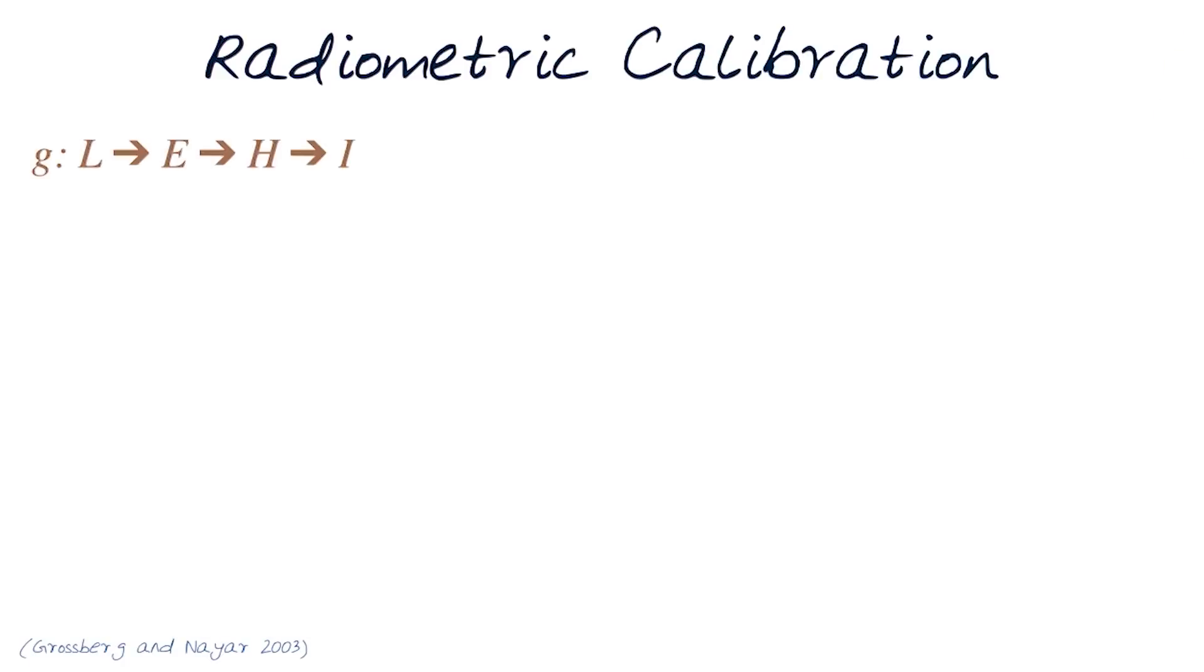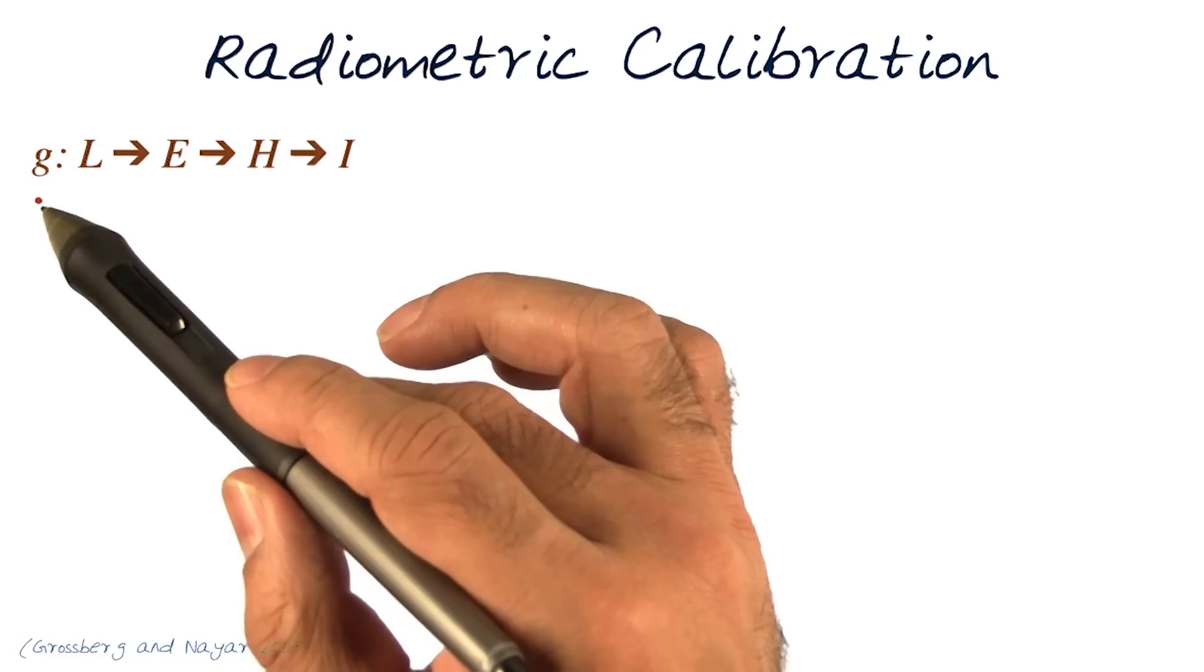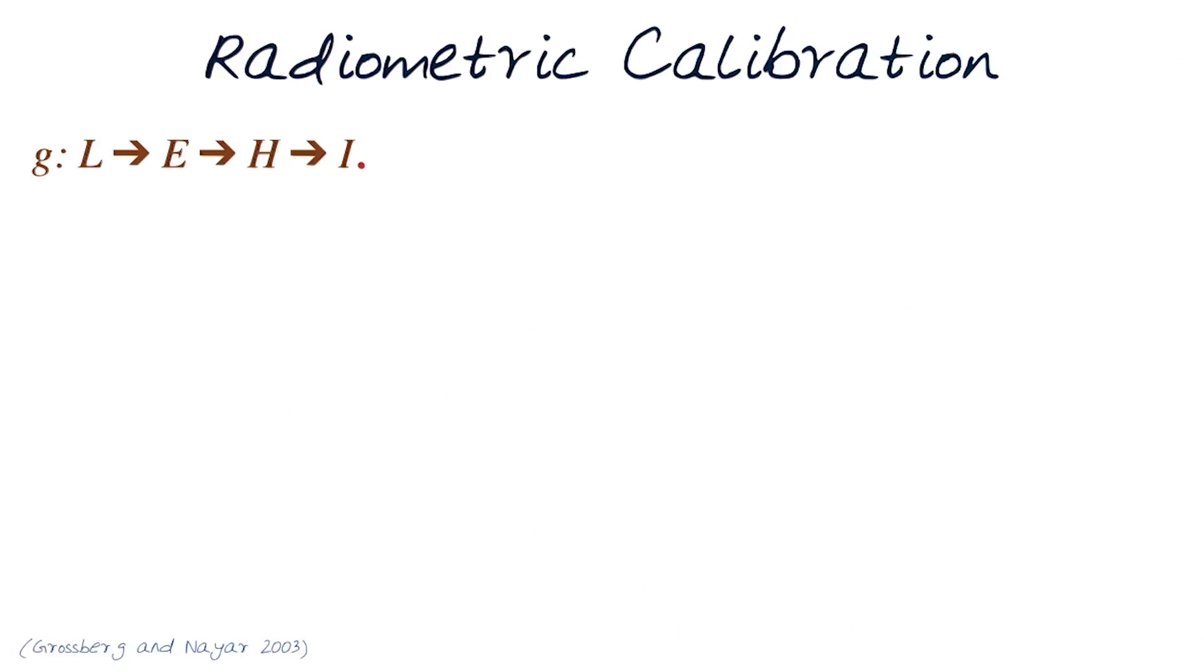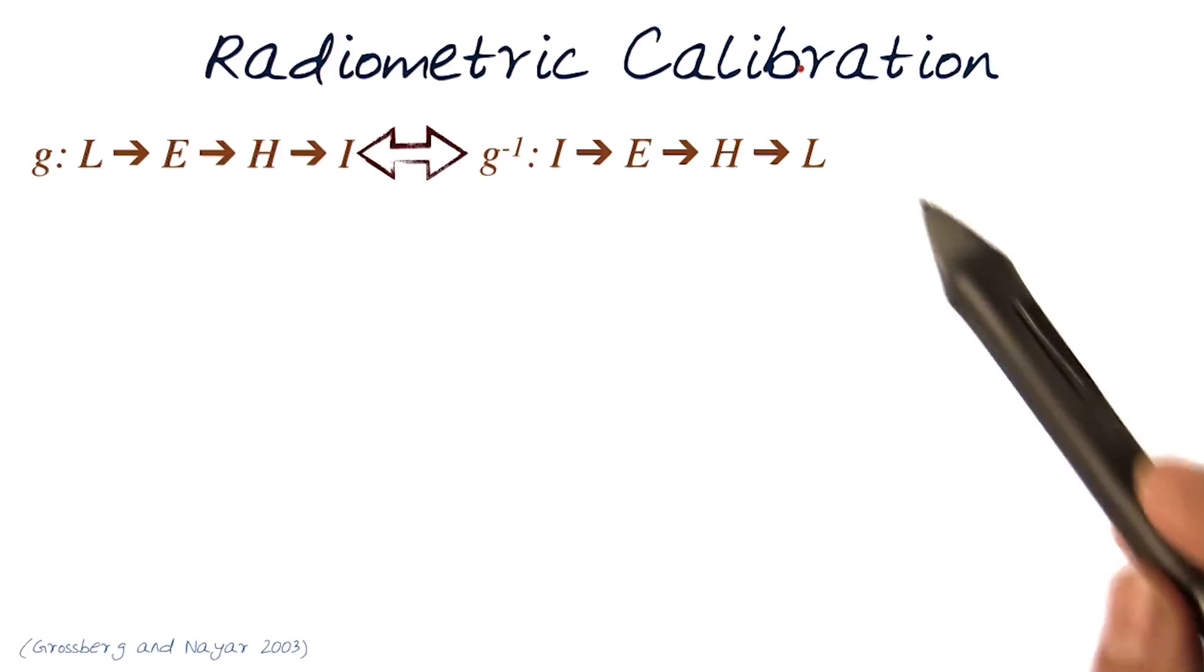How do we do radiometric calibration? We are interested in this pipeline of going from L towards I, but we also want to be able to model the inverse phenomenon a bit.